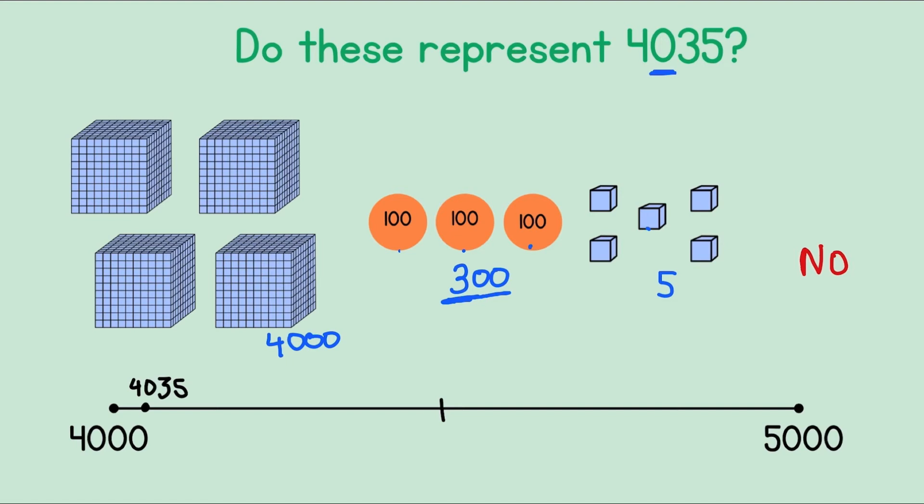Let's check the number line. On the first side of the number line we have 4,000 and on the other side we have 5,000. 4,035 has to be very close to 4,000. So this one is correct.